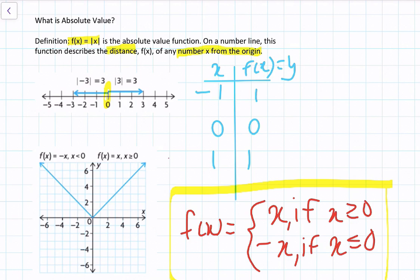On this number line we can see the origin, otherwise known as 0. We have two arrows pointing out from the origin — one reaching negative 3 and one reaching positive 3. Both arrows are three units away from the origin. The emphasis here is on how many units away a value is from the origin.